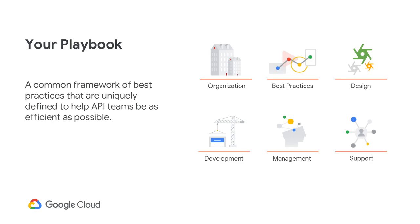Your Playbook should focus on the six key areas: your organization, best practices, API design decisions, development requirements, API management and deployment processes, and overall support guidelines.